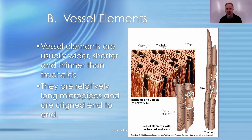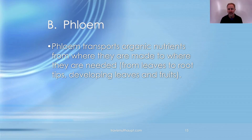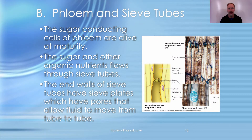Vessel elements are larger and shorter than tracheids, but similarly are micropipes aligned end to end. The phloem transports organic nutrients from where they're made to where they're needed — generally from leaves to roots and shoots. If excess sugar is made, it ends up in the sink known as fruits. Where sugar is needed is called the sink; where it's made is the source. The sugar-conducting cells of the phloem, the sieve tubes, are alive at functional maturity. Sieve plates join tubes end to end, allowing sugary carbohydrate-rich fluid to move through.